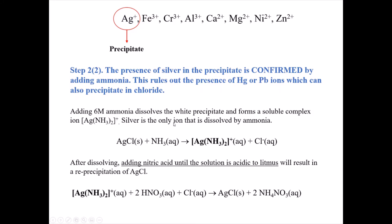Once we've separated the silver from the rest, we do a confirmatory test. The presence of silver in the precipitate is confirmed by adding ammonia. In true unknown samples, mercury and lead can also precipitate chloride, but this procedure of re-dissolving with ammonia wouldn't work with lead or mercury—they would not dissolve when we add the ammonia. So we add 6 molar ammonia, which dissolves the white precipitate by forming a soluble silver-ammonia complex.